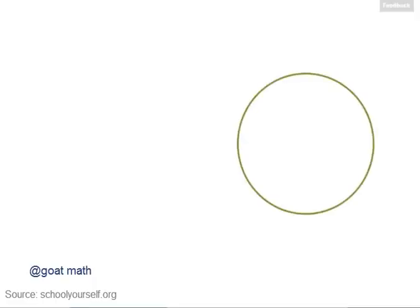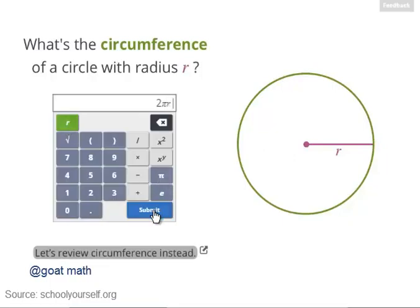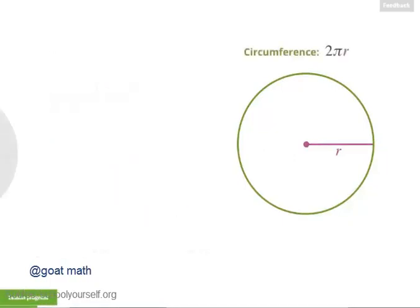Let's start with a circle whose radius is R. What's the circumference of this circle in terms of R? In other words, what's the total length around the circle? The circumference of a circle is 2 times pi times its radius.